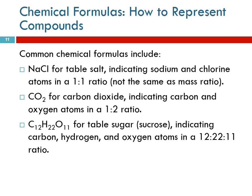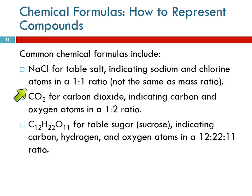Some common chemical formulas: table salt is NaCl — there are no subscripts, so they each have one. Sodium is Na, chlorine is Cl — a one-to-one ratio of atoms. The mass ratio would be different, but the atom ratio is one to one. Carbon dioxide is CO₂: one carbon and two oxygens, a ratio of one to two.